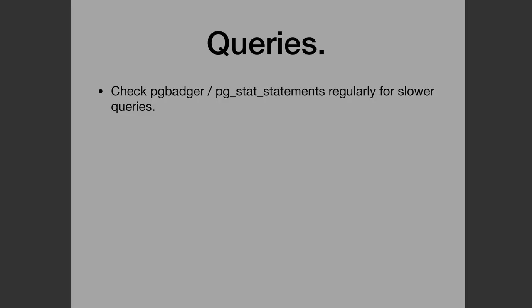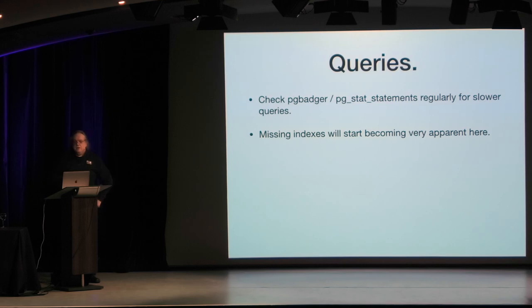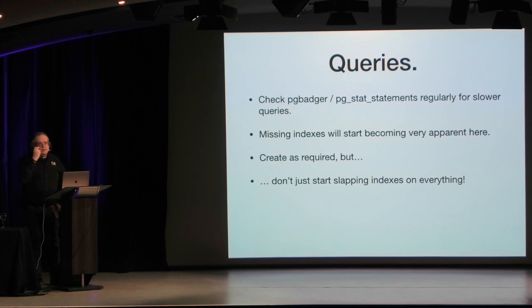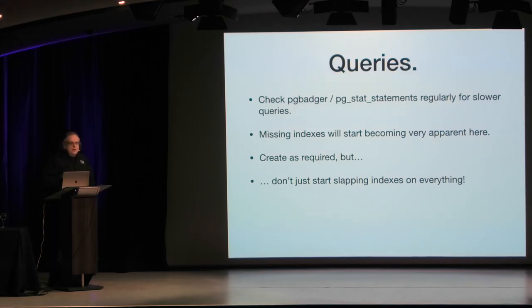Check PG Badger and pg_stat_statements regularly for slow queries. If you're missing indexes, they will start becoming very apparent in databases of this size. Create the indexes as you need to, but don't just start slapping indexes on everything. This is a common ORM problem where the ORM manages the schema - as a Django example, there's a tendency to set db_index=True for everything, thinking 'I might query on this.' Indexes are very, very expensive - they're expensive to create and expensive to maintain. I just did a test: inserts into a table with just a primary key versus one with 14 indexes plus the primary key was about 100 times slower. Create indexes based on real workload, not prospectively.